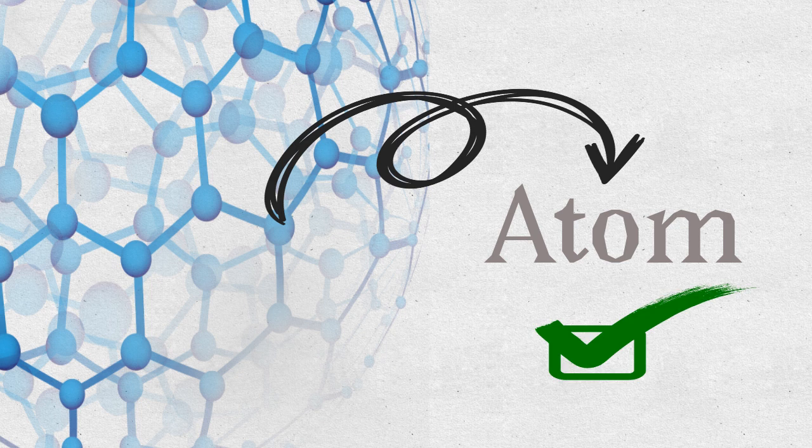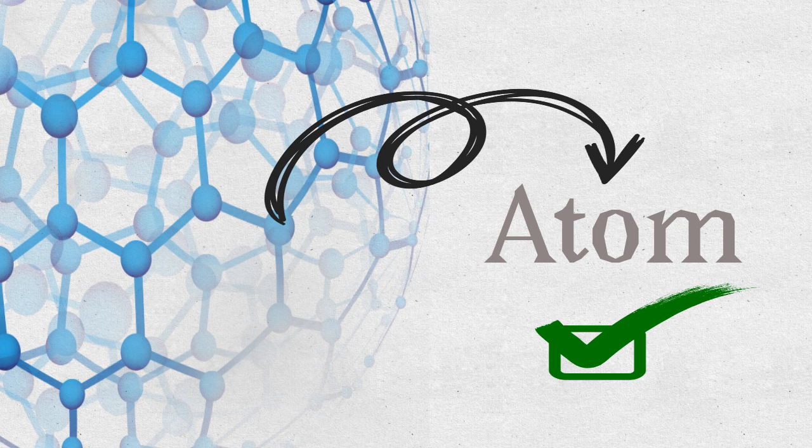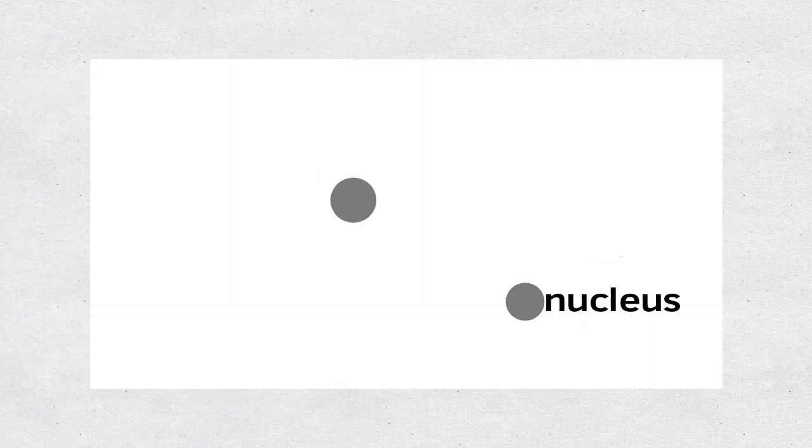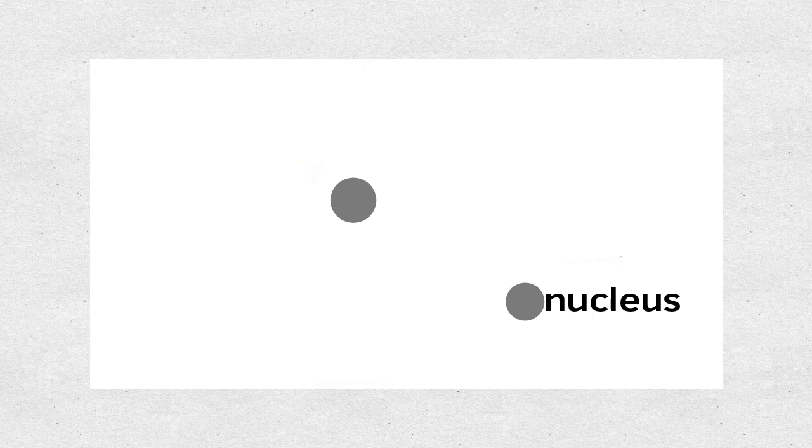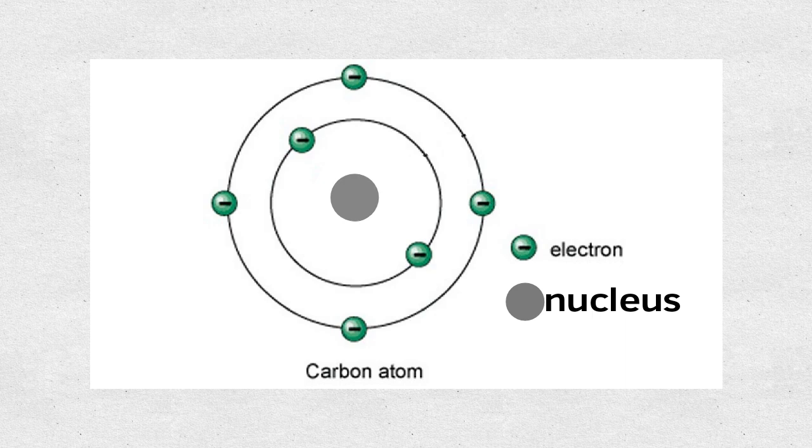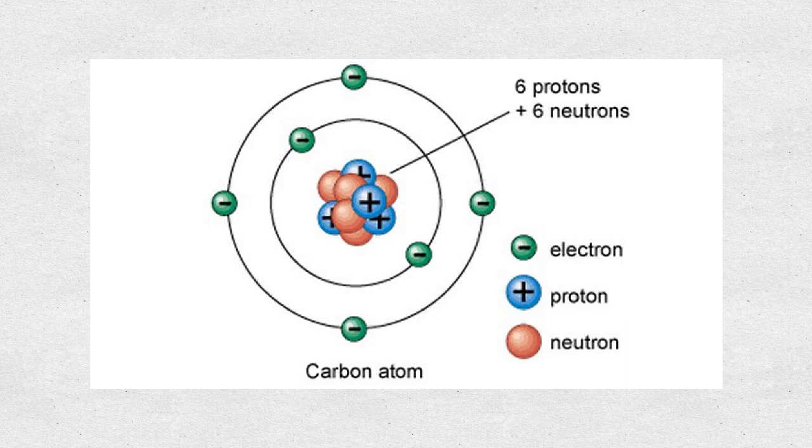But scientists discovered that each atom could be divided further. Each atom consists of a nucleus in the middle and electrons orbiting it. The nucleus in turn consists of protons and neutrons.